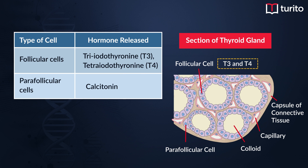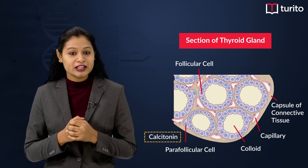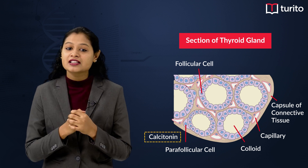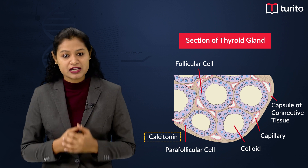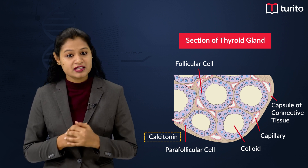Another type of cell present in the thyroid gland is the para-follicular cell, which is responsible for releasing a hormone called calcitonin. Calcitonin plays a very important role in calcium homeostasis and is hypocalcemic and hypophosphatemic in nature.